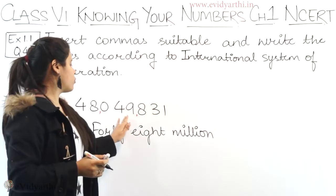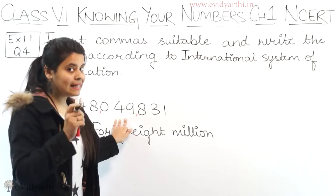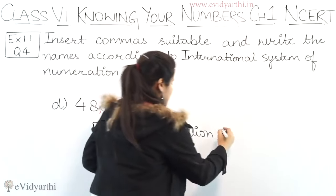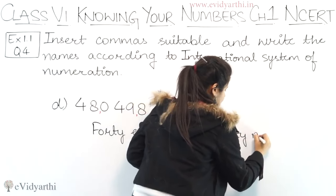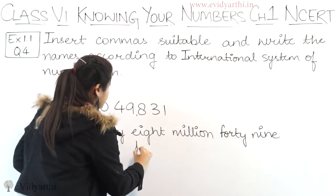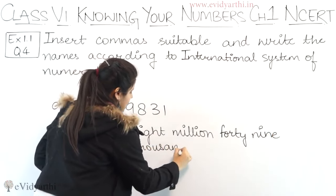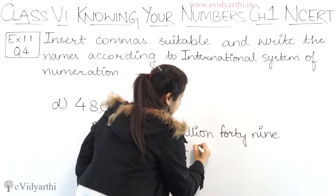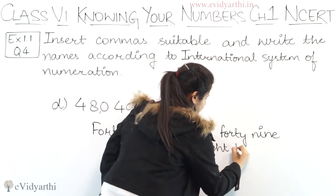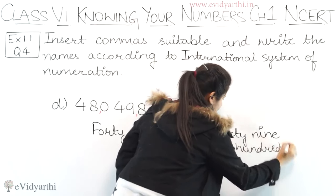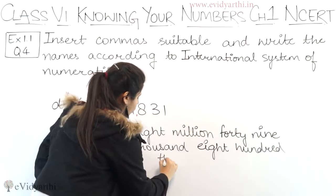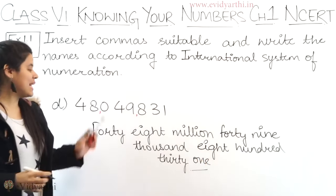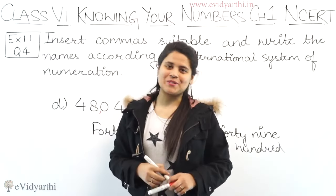Next, we have 049, which is considered as 49. After 49 there are 3 digits, so it is 49 thousand. Then we have 831 at the end. So the full number is 48,049,831. This was the last part of this question. Now let's come to the next question.